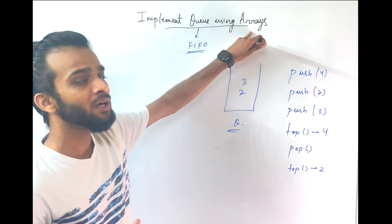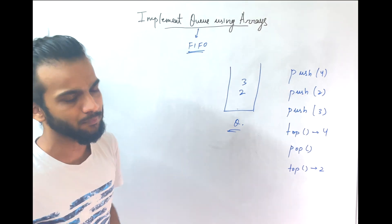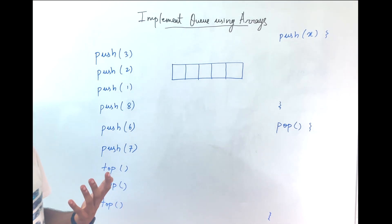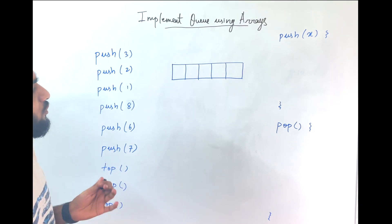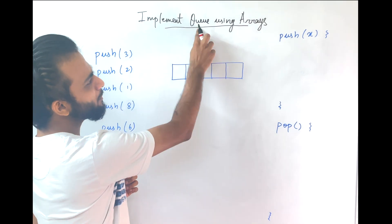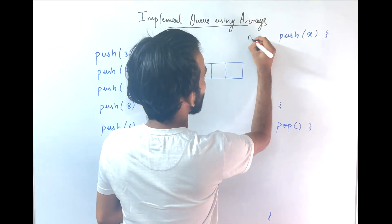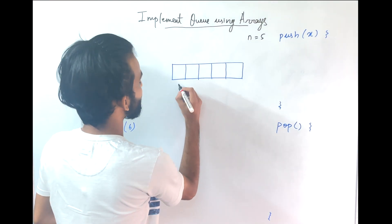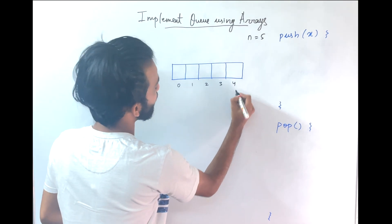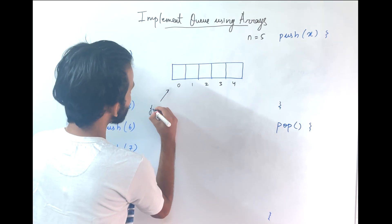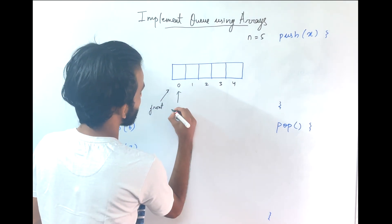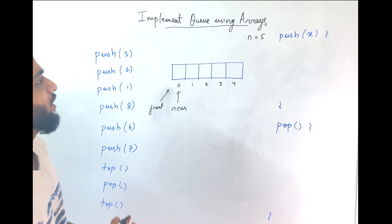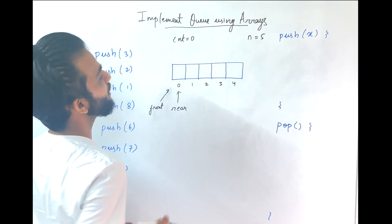We are going to implement this using arrays. Imagine the maximum size of this queue data structure can be around 5 — that is the maximum number of elements it can hold. The indexes go from 0 to 4. We will have two pointers: the front pointer and the rear pointer. We keep the count of elements initially at 0.